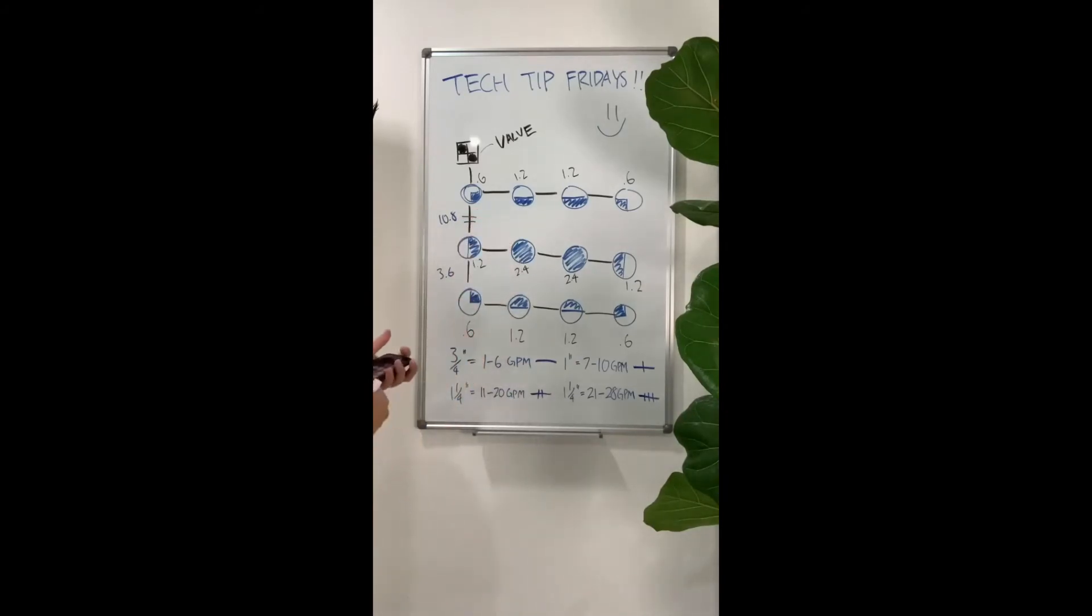And last but not least, what we need to calculate is the last section right here. So you got 0.6 plus 1.2 plus 1.2 plus 0.6 would give you 3.6. So you got 3.6 GPMs running through here, all three-quarter inch pipe. But what we want to do now is figure out what size pipe is this section right here. So we add up 3.6 plus 10.8 plus 3.6 and we get 18 GPMs.